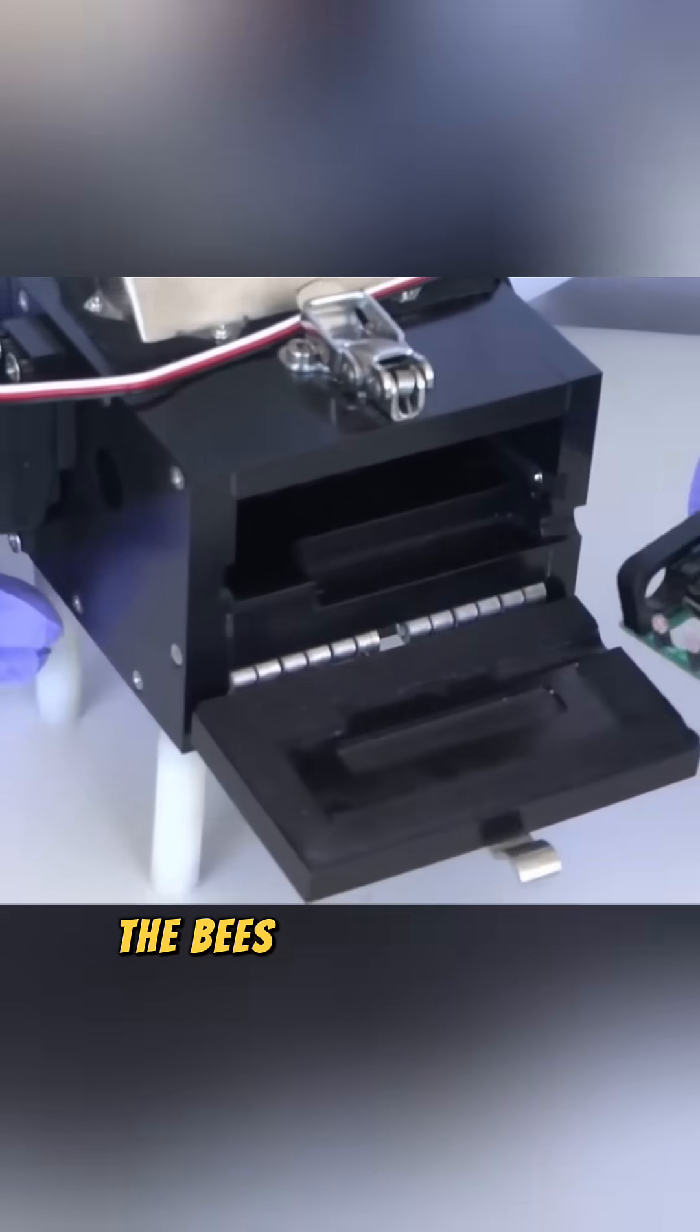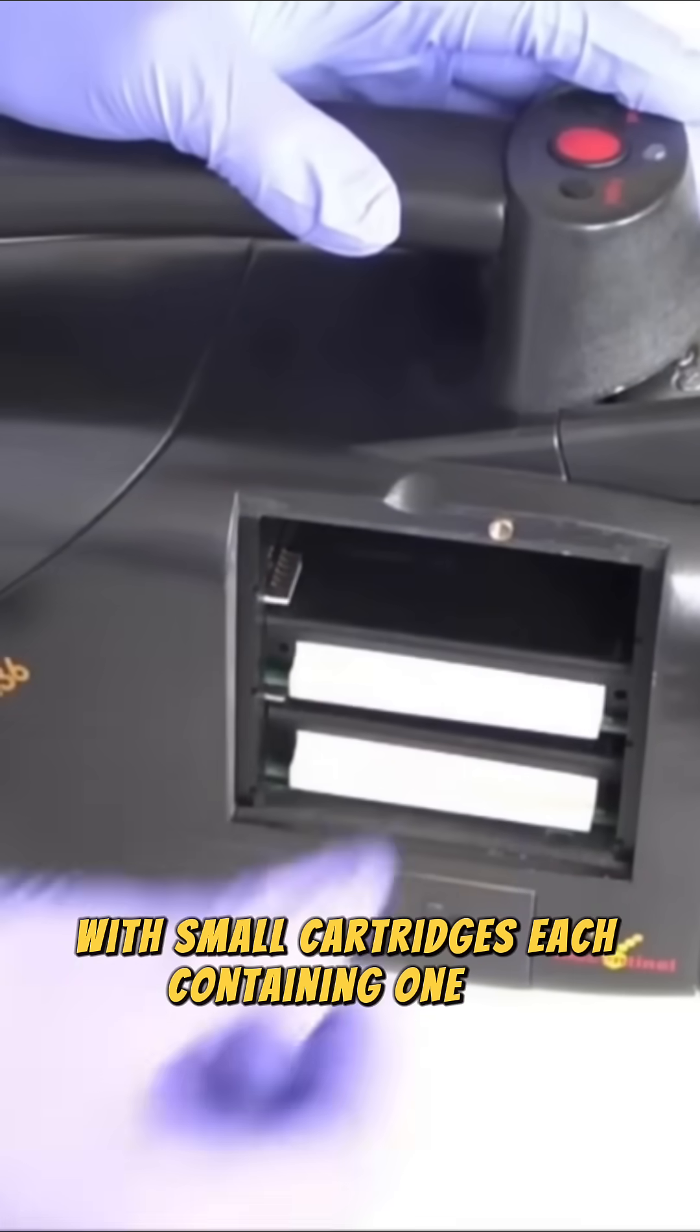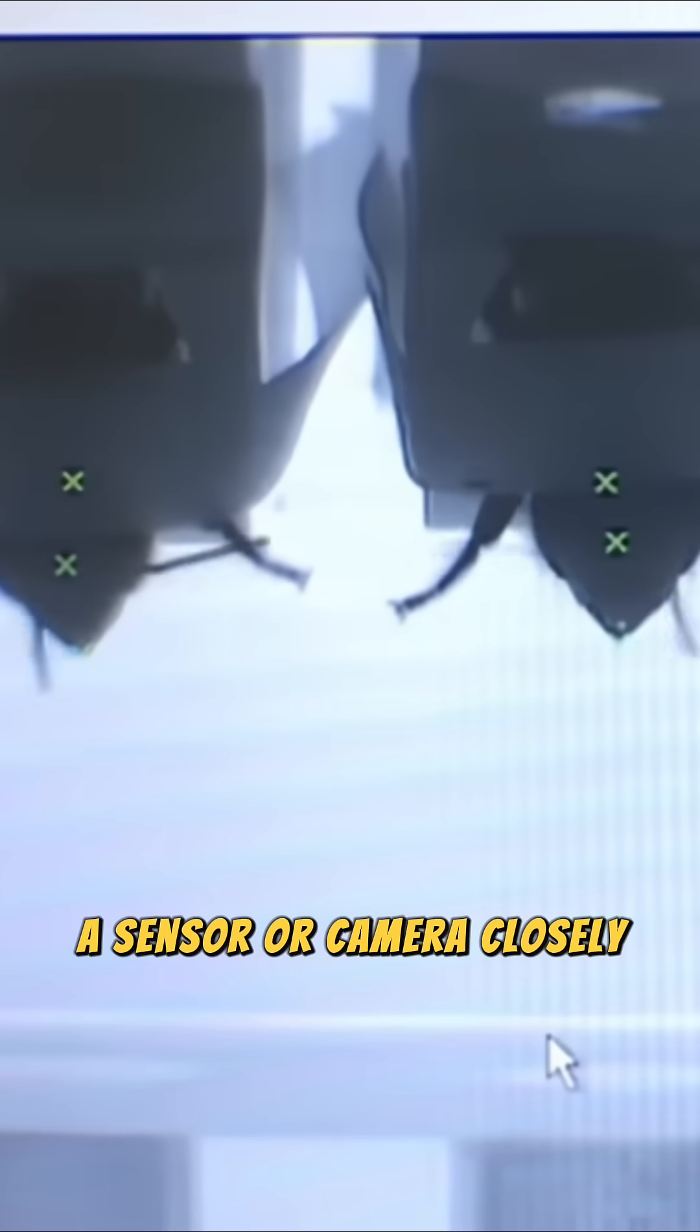Now they are ready for work. The bees are placed in a special device with small cartridges, each containing one bee. A sensor or camera closely monitors them.